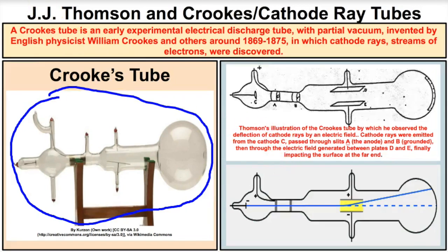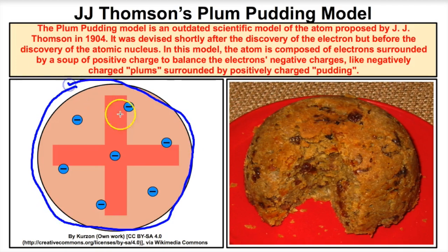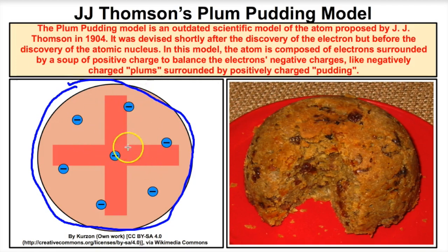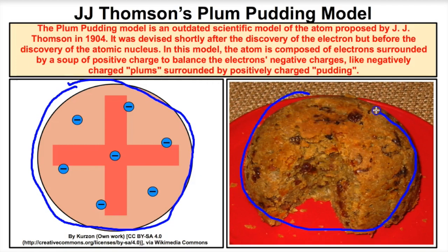From that experiment, Thompson develops the plum pudding model of the atom. He states that an atom is a positive goo with a bunch of tiny negative particles — electrons — dispersed randomly throughout it. You can think of it like a blueberry muffin: the blueberries are the negative electrons, and the muffin is the positive goo. This model stood for several years until another scientist came along and built upon it.